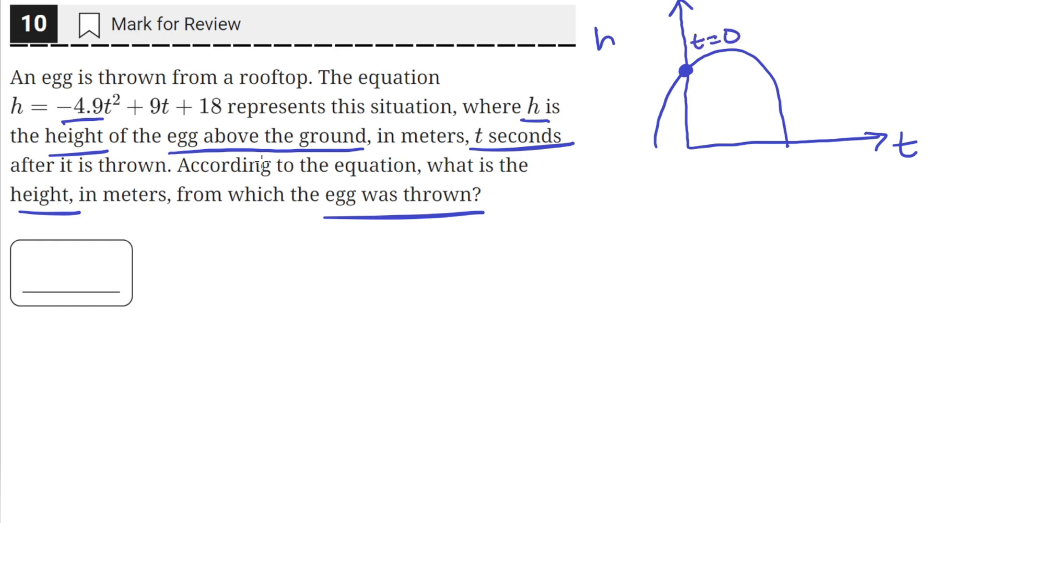When the egg was originally thrown, t equals zero in this equation because t represents the seconds after it is thrown. So this moment when it is thrown, t equals zero, and if we plug in t equals zero into this equation, the value of h will be the value of the height from which the egg was at the moment it was thrown.